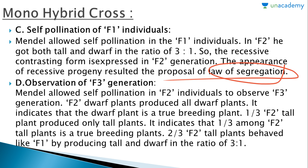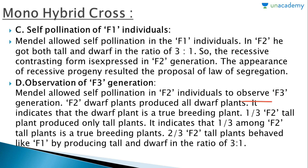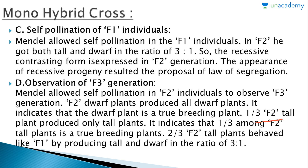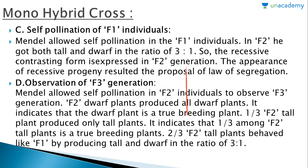Mendel also observed the F3 generation by allowing self-pollination in F2 individuals. The F2 dwarf plants produced all dwarf plants, indicating the dwarf plant is a true-breeding plant (tt). One-third of the F2 tall plants produced only tall plants, indicating they were true-breeding tall plants (TT). The remaining two-thirds of F2 tall plants behaved like F1 progeny, producing tall and dwarf in a ratio of 3:1 — these were heterozygous (Tt), similar to the F1 generation parent.